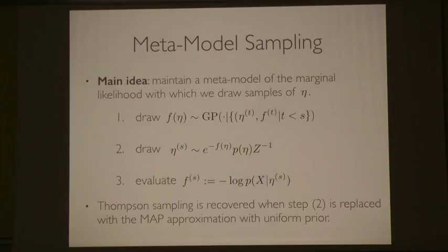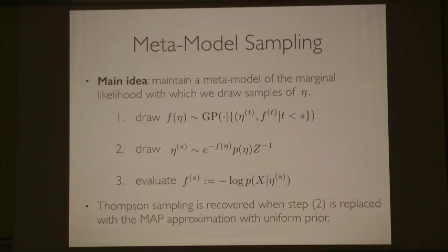It's kind of wacky because the GP is a prior over functions — we draw a function — but the function here is a distribution from which we're drawing hyperparameters. An interesting point is that you can actually recover Thompson sampling from this. If you replace step two with maximization instead of sampling, and use a uniform prior over eta, then that is Thompson sampling. Thompson sampling says: draw a realization of the rewards, maximize it, then evaluate with our environment for the next step.